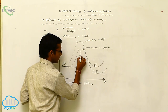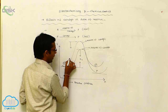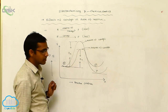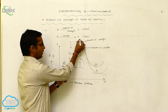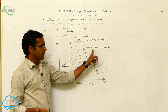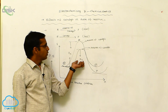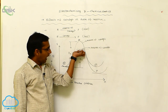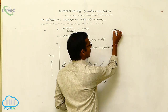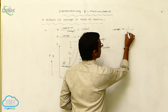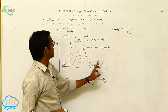The energy difference between the reactant and the peak of the curve is called activation energy. In absence of catalyst, the reactant is converted to the intermediate requiring more activation energy. In presence of catalyst, activation energy decreases, so the rate of reaction is fast. That is the use of a catalyst.